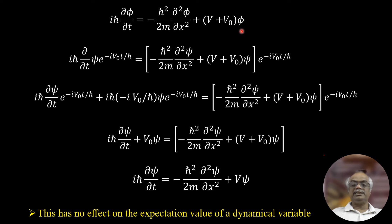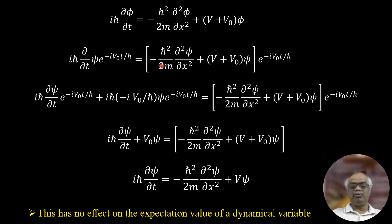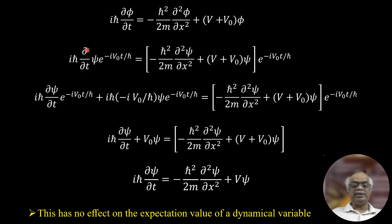Now we substitute pi back using its definition: psi times e to the minus i V-naught t over h-bar. On the right-hand side, we take the exponential e to the minus i V-naught t over h-bar as a common factor. This gives minus h-bar squared over 2m times delta squared psi over delta x squared, plus V plus V-naught times psi, multiplied by that exponential term.